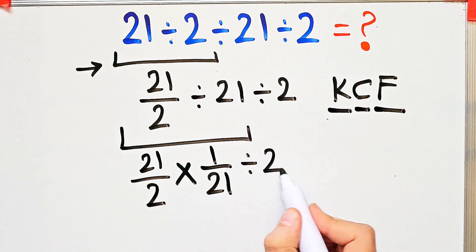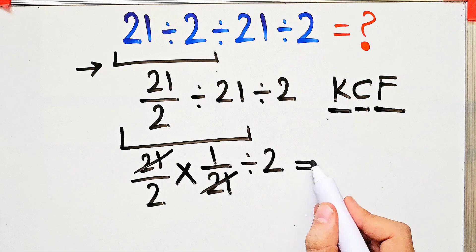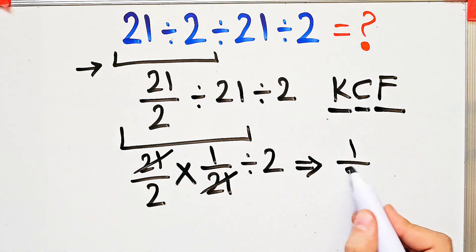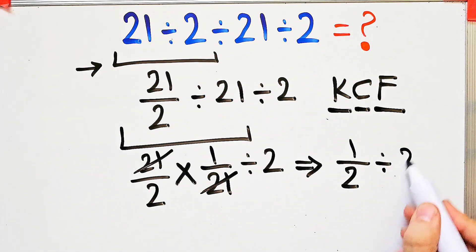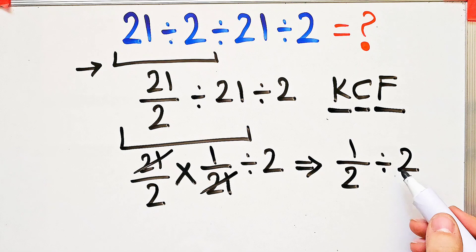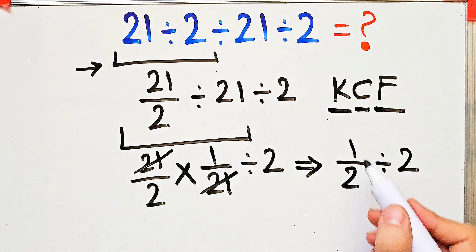Now we have a new expression. We simplify the question and now we have 1 over 2 divided by 2. Again, to solve this part, we need to follow the KCF rule.